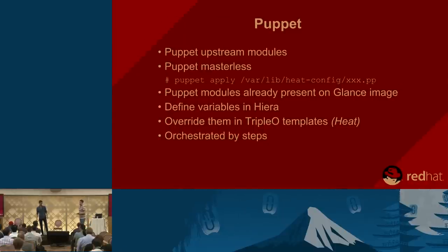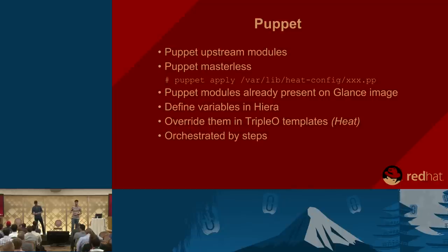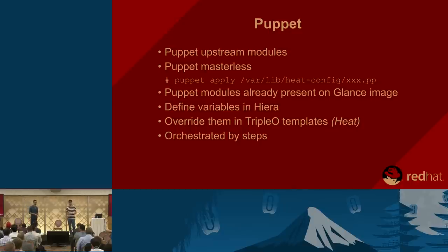We use Puppet modules from the community, and Puppet is set up in a masterless configuration because you don't want your Puppet master to be a bottleneck. Each node contains all the manifests and runs a Puppet apply locally. The Puppet modules are also pre-stored in the Glance image used for deployment. You can overwrite virtually every parameter of your Puppet modules in the Triple O templates without touching the modules on the nodes directly, because Hiera reads variables from the Triple O templates and feeds them to Puppet.